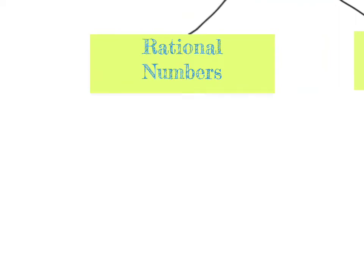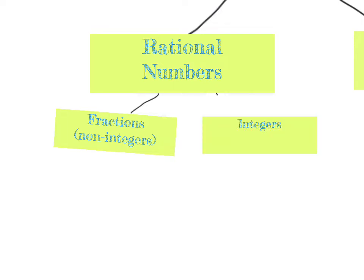Inside of rational numbers, you'll find fractions that are non-integers and integers. For fractions, you'll see numbers like twelve-thirteenths, three-fourths, or in decimal form, 0.52. The point is they're not the integer version of fractions, and we'll talk more about that in a minute.